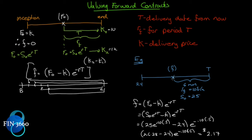Because a futures contract is marked to market every day, that $2.17 represents the current value. If this were a forward contract and with six months left we called the other side to exit, we'd both value the contract as of that date. It's worth $2.17. Since the new futures price is higher than the original, the long position receives $2.17 and the short position pays it.